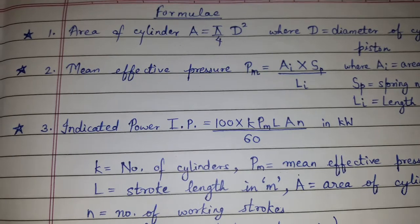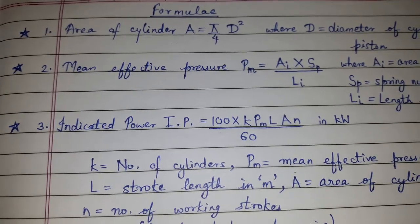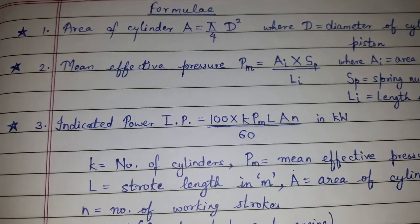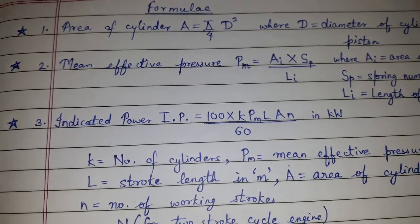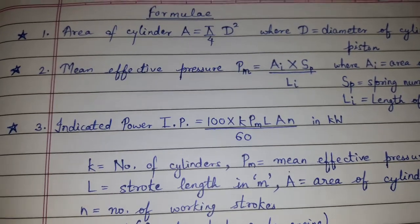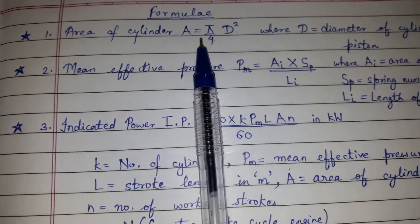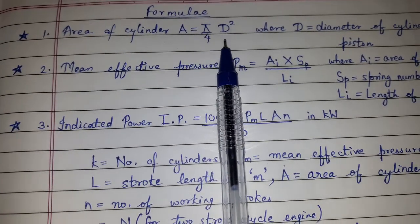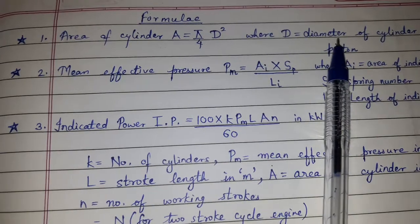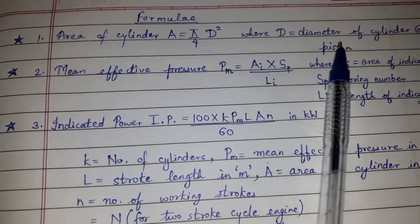The star marked formulas are those formulas which will be used more often and remaining formulas will also be used whenever required. First formula, area of cylinder A is equal to π/4 D² where D is the cylinder or piston diameter.